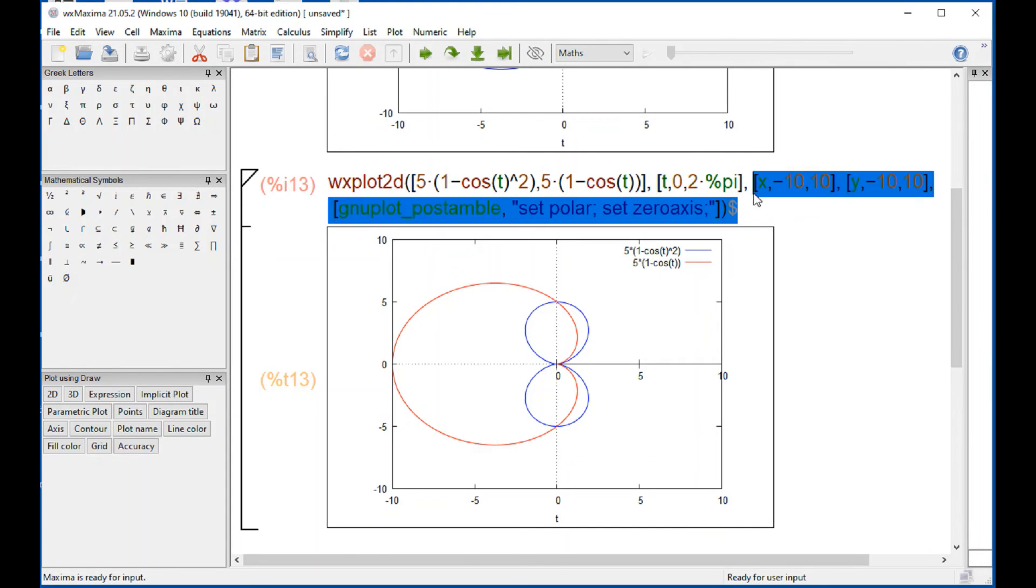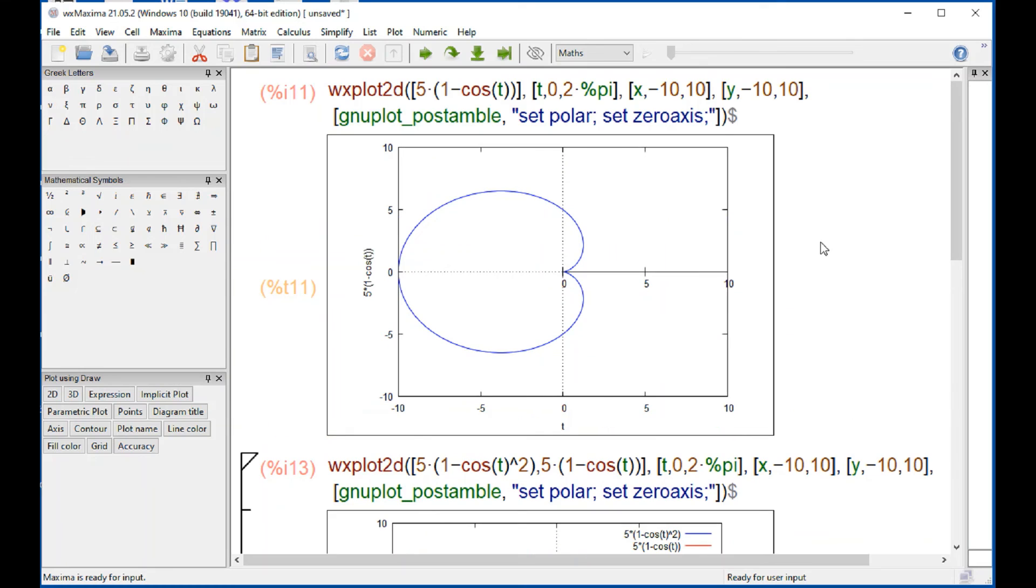But again it seems that besides the angle going from zero to two pi which is what we typically expect, we also need to specify a symmetric range.